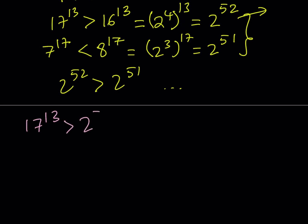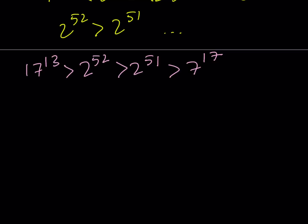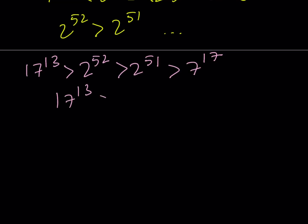But 2 to the power of 52 is obviously greater than 2 to the power of 51. And as you know, 2 to the power of 51 is greater than 7 to the power of 17. So the chain of inequalities is basically going to give us 17 to the power of 13 is greater than 7 to the power of 17. So this is going to be our larger number.